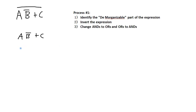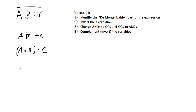Step three is to change ANDs to ORs and ORs to ANDs. So this becomes A OR NOT B, ANDed with C. Step four is to complement or invert all the variables. This last step creates a function equal to the original. So A gets inverted, NOT B gets inverted — keeping those brackets — and C gets inverted. The double NOT goes away, and the final expression is NOT A OR B, ANDed with NOT C.